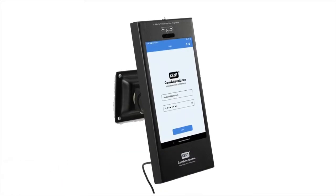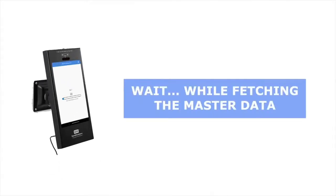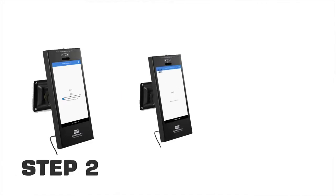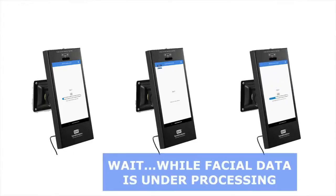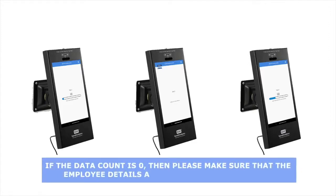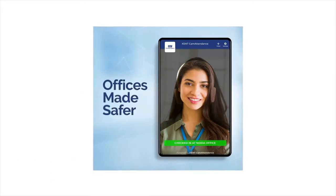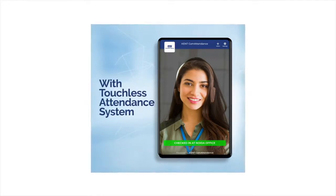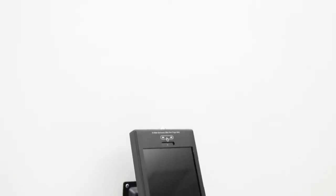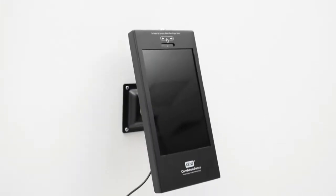Step 26: Device goes through the following steps. Step 1: Wait while fetching the master data. Step 2: Waiting for license validation. Step 3: Wait while facial data is under processing. Note, if the data count is zero, then please make sure that the employee details are mapped in the cloud app. Step 27: Tablet application comes to the recognition mode and attendance gets marked successfully. With this step, we have successfully completed the installation of Kent Cam Attendance device.